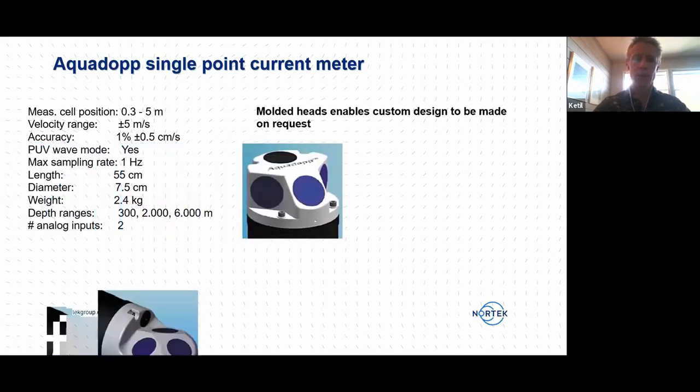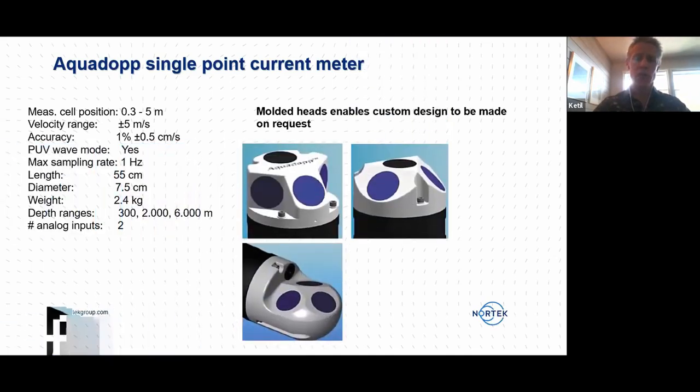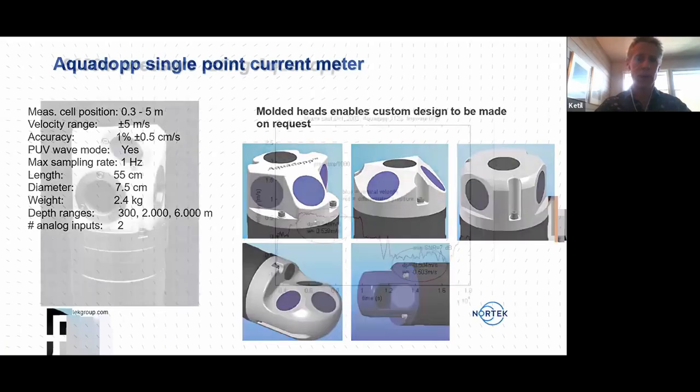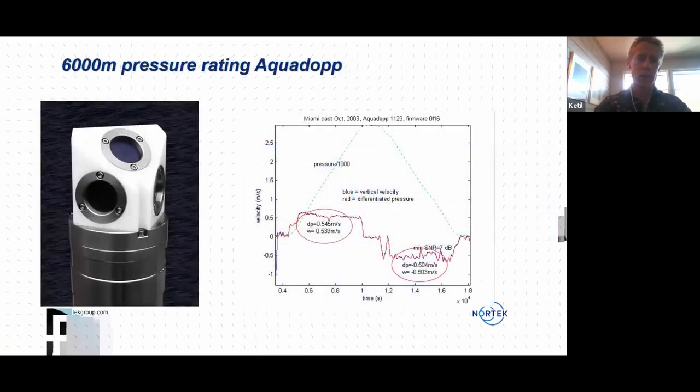We have made it possible to use this in very many different types of applications with different head configurations. This is a standard mooring type head. This is a symmetrical head. Here we have what we call a hockey puck head used for seawall mounts, for instance. This one is when you want to place the sensor very close to the seabed looking upwards. And here is a 2D head used for side looking applications.